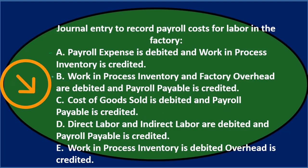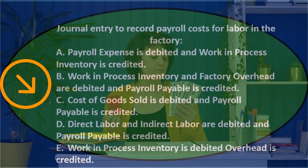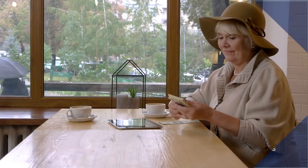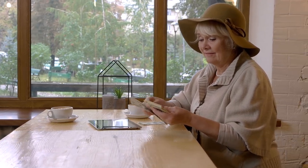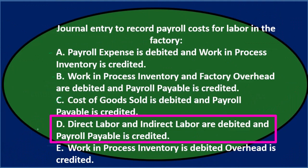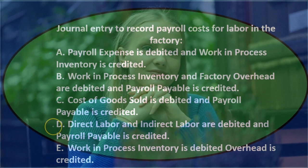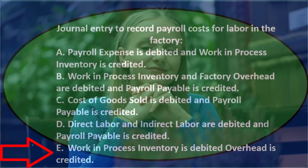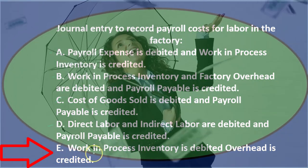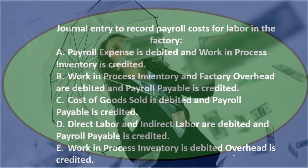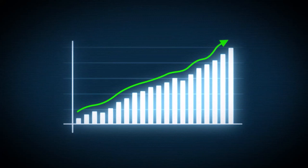C says cost of goods sold is debited and payroll payable is credited — that doesn't seem reasonable because cost of goods sold is where we expense inventory at the end when we've sold it, not now. So it's not C. D says direct labor and indirect labor are debited and payroll payable is credited — that sounds kind of reasonable. E says work in process inventory is debited and overhead is credited — both should be going the same direction as they're both inventory accounts, so it doesn't make sense that one is debited and the other credited. I don't think it's E.